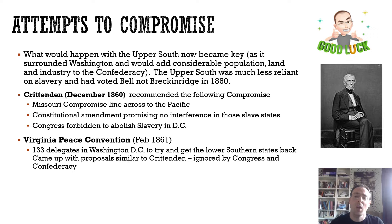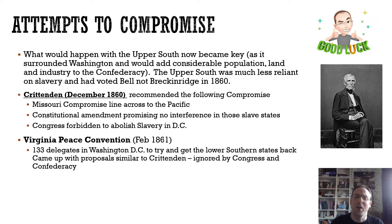There were attempts at compromise — though good luck given everything that had developed over the previous decade. The upper South's position was unclear; they had voted for Bell, not Breckenridge. The first attempt had come in December 1860 as the Crittenden Compromise, essentially proposing to extend the Missouri Compromise line across all states — anything above, no slavery; anything below, slavery permitted. It also promised a constitutional amendment guaranteeing no interference with slavery where it already existed.